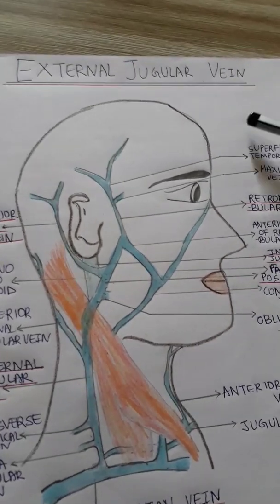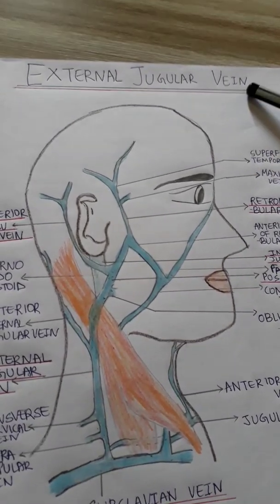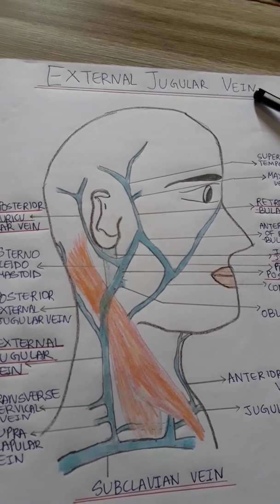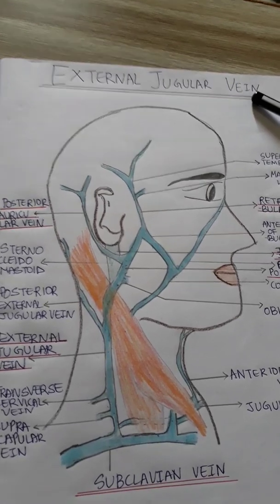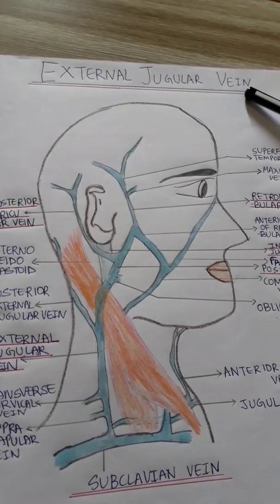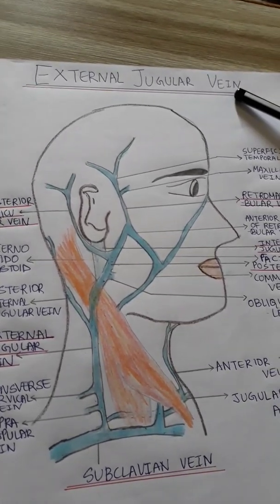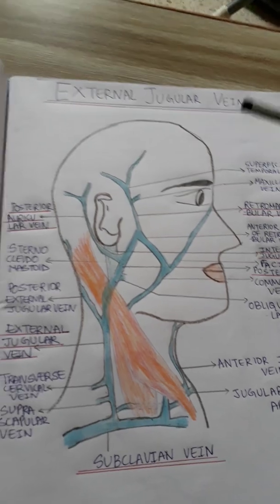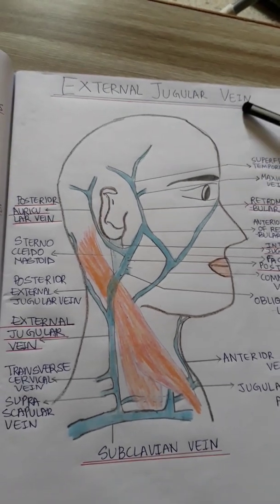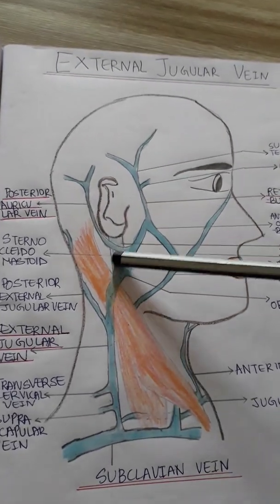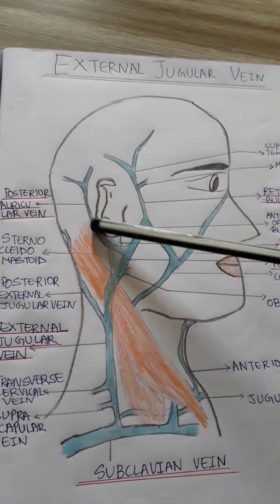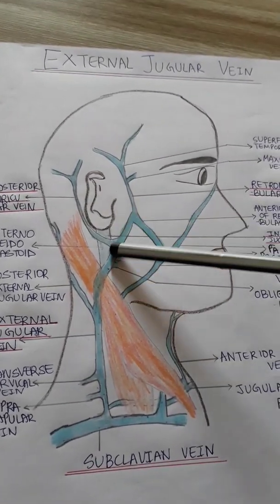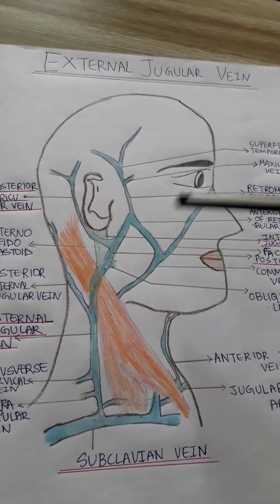The external jugular vein is one of the superficial veins of the neck — it is very easily palpable and located very superficially in the neck. It is formed by the union of the posterior auricular vein with the posterior division of the retromandibular vein.